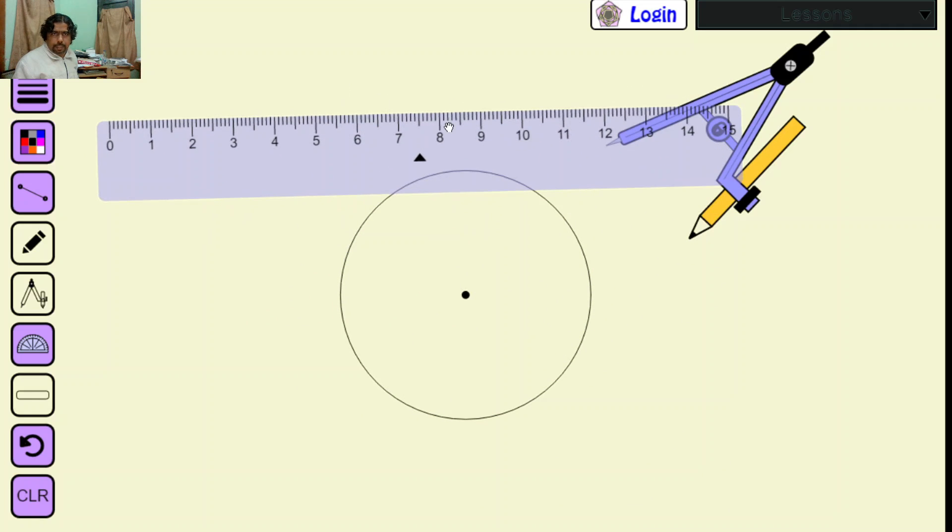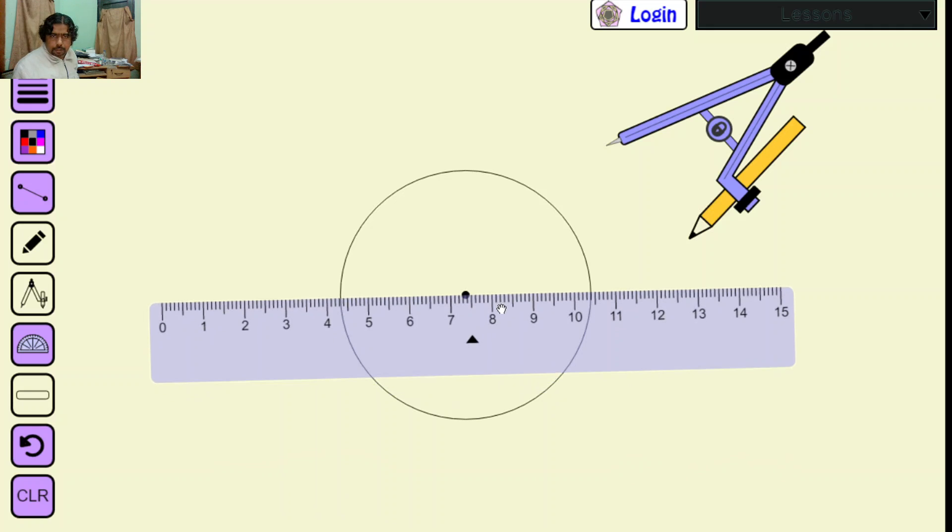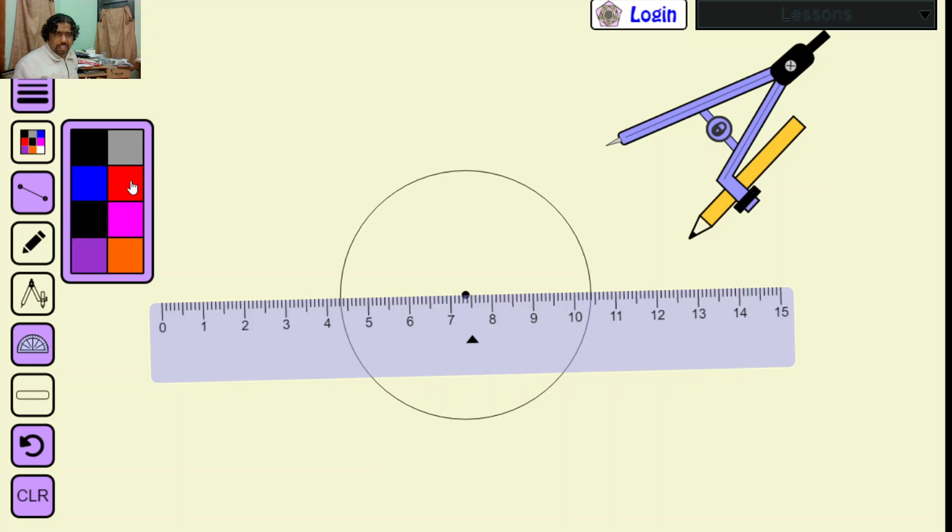Now you can change the thickness of your marking. I have made this a little smaller thickness. You can also change the color.